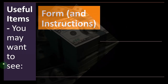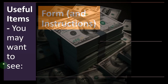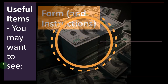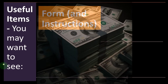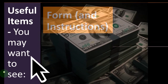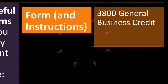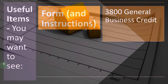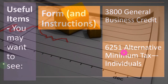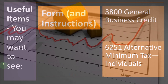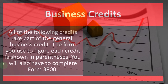Credits are different from deductions in that they provide a dollar-for-dollar benefit. If you had a dollar credit versus a dollar deduction, you would generally want the dollar credit, because then you get the full dollar benefit of it — whereas a deduction will decrease your income, resulting in a benefit based on your tax rates. For useful items, you may want to see Form 3800 (General Business Credit) and Form 6251 (Alternative Minimum Tax — Individuals), which you can find on the IRS website.